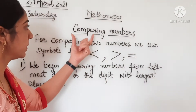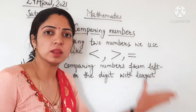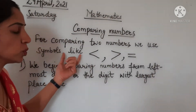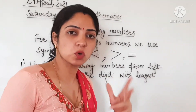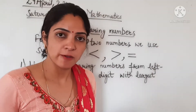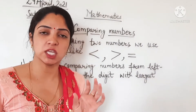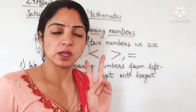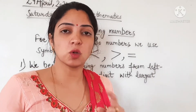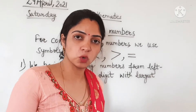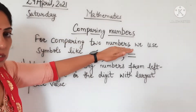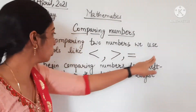Our next topic is comparing numbers. Comparing numbers means when we compare two numbers, we use symbols. We have to find which number is smallest, which number is biggest, and whether the numbers are equal. When two numbers are given, we compare to find out which number is bigger, which is smaller, or if both numbers are equal.